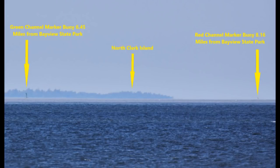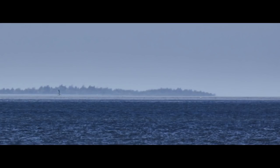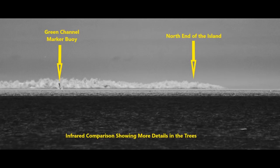Now let's take a look at a telephoto shot using a 1,000 millimeter lens on a regular DSLR. The green buoy channel marker is indicated on the left at 6.45 miles from Bayview State Park and the red channel marker is at approximately 8.16 miles on the right. You'll notice from the NOAA chart map the two buoys line up in relation to the direction of Clark Island. In this regular photo you're able to see a lot of Clark Island and the green buoy channel marker on the left, and in the infrared photo from the same location you're able to see better detail in the trees and the island itself.